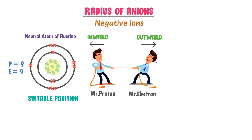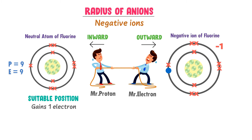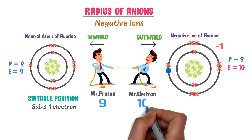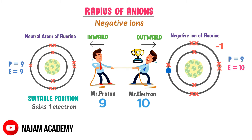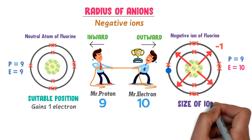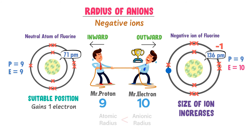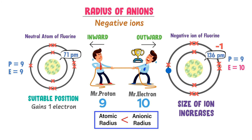Fluorine is a non-metal. To get stability, the fluorine atom will gain one more electron and become a negative fluorine ion. Now there are 9 protons and 10 electrons in the fluorine ion. Here, the electrons win because the number of electrons dominates the number of protons. As a result, electrons move away in the outward direction and the size of the fluorine ion becomes bigger. The atomic radius of a neutral fluorine atom is about 71 picometers, and that of the fluorine ion is about 136 picometers. Thus, the atomic radius of the neutral atom is smaller than the ionic radius.